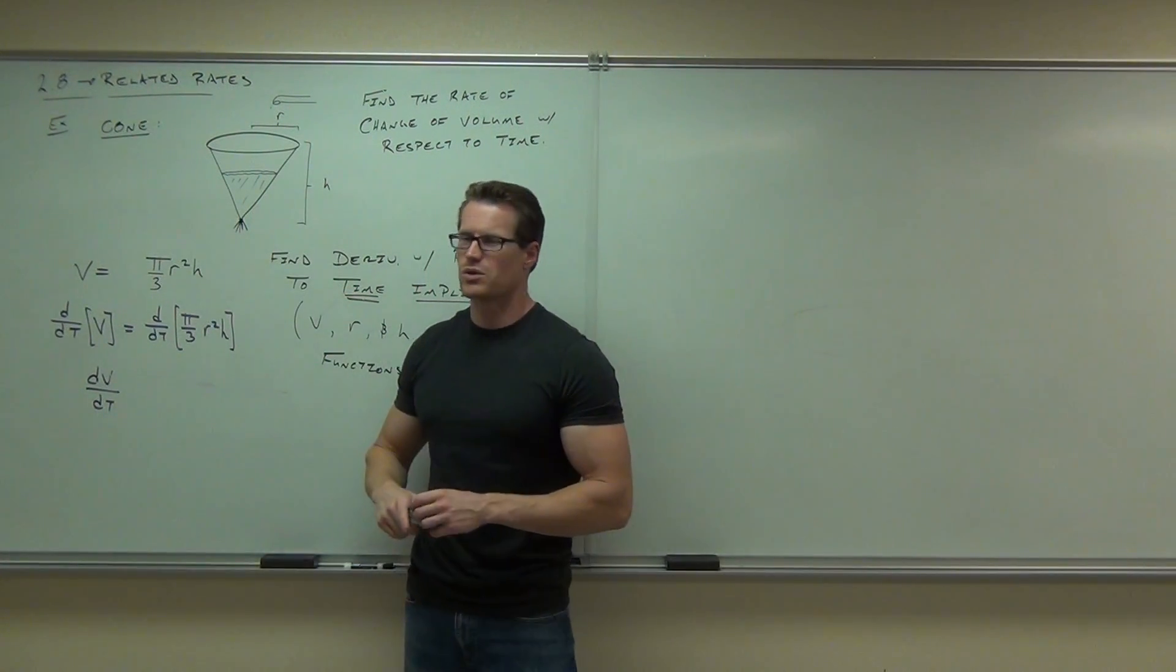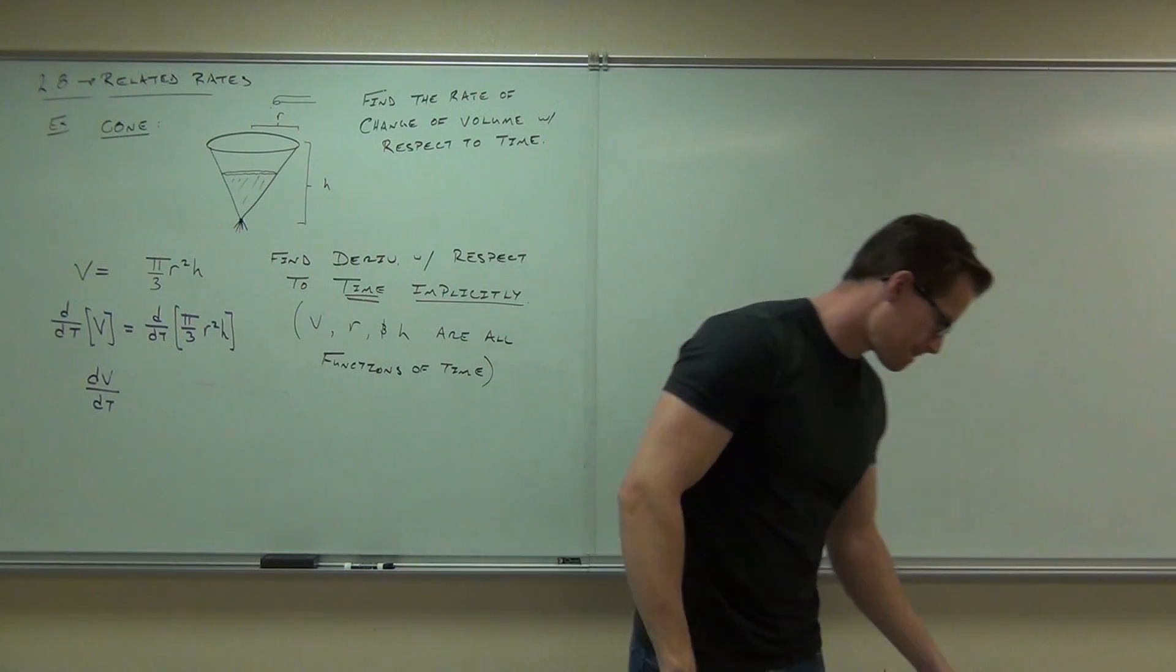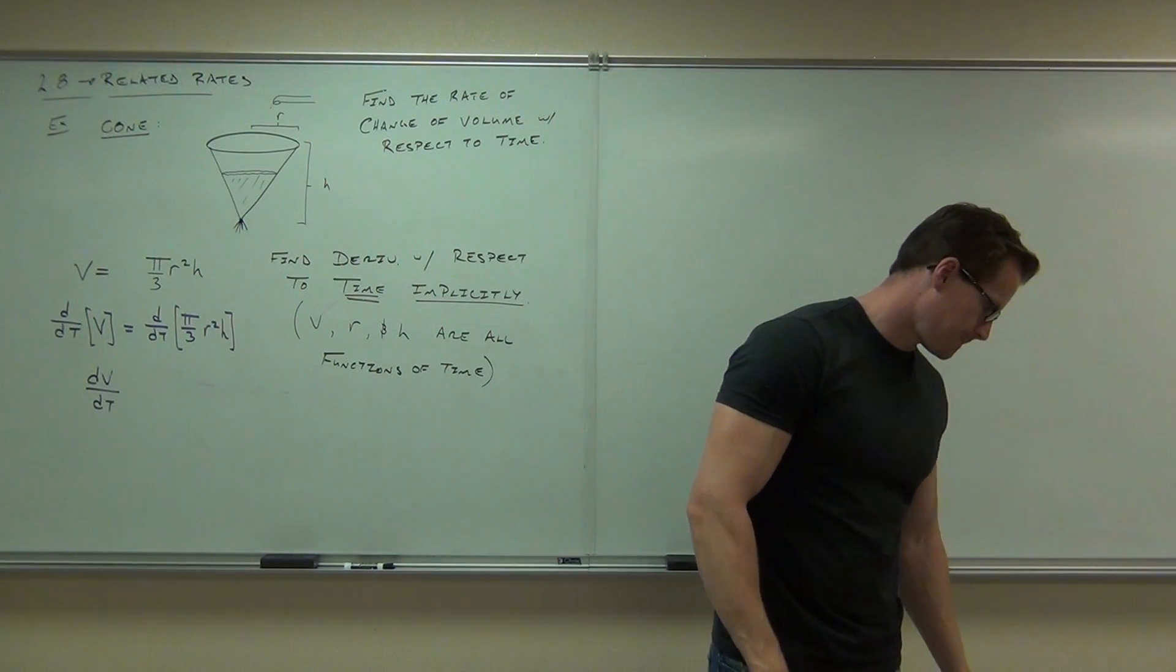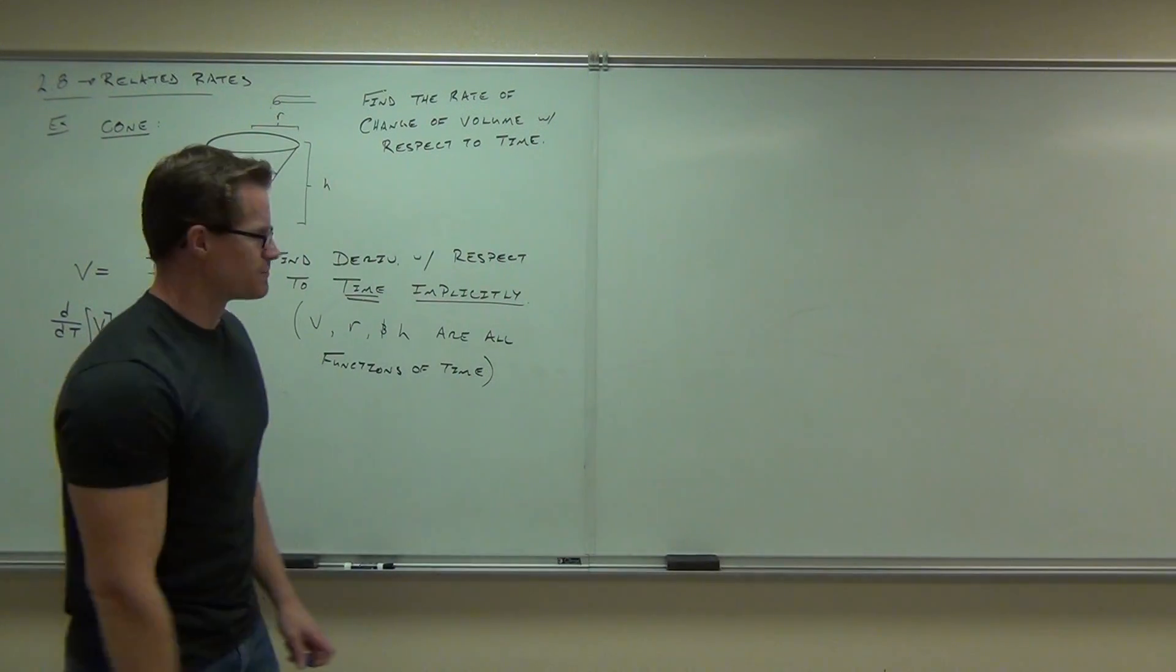You set up the product rule. You can do it one of two ways. You can take the pi over three out, or you can associate with one of the variables. It really doesn't matter. I think I took it out. I don't know why, but it really doesn't matter.